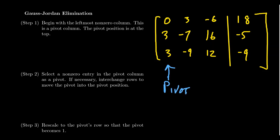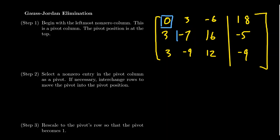The column gets the name pivot because the rest of the row operations we're going to do will be pivoting around the pivot position we're now going to introduce. Given our pivot column, we're going to put the pivot position in the topmost spot. As we move to the right in the matrix, the next pivot position can't be higher than the previous one, because we're trying to put the matrix in echelon form. Step two is to select a non-zero entry in the pivot column and move it into the pivot position using an interchange operation.